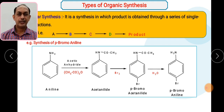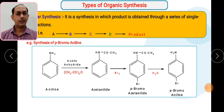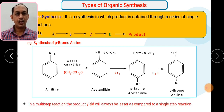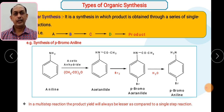This type of synthesis is called linear synthesis, where every product formed in each step is converted into further products until the desired product is obtained. In linear synthesis, the yield obtained decreases at each step because byproducts formed reduce the final yield. As the number of steps increases, the yield decreases. So the yield in linear synthesis is always less compared to a single-step reaction.